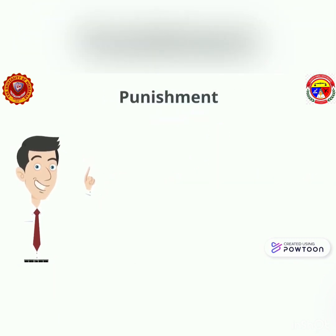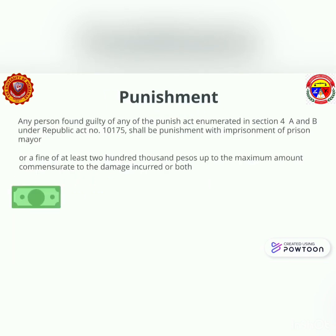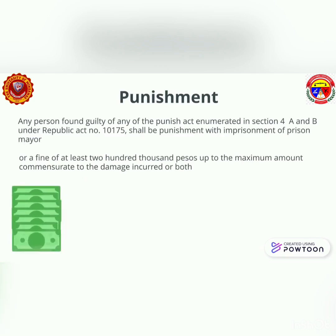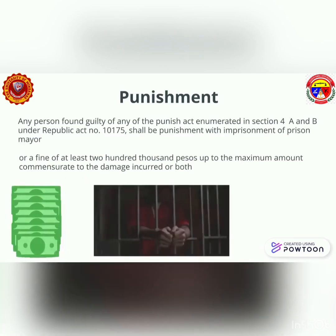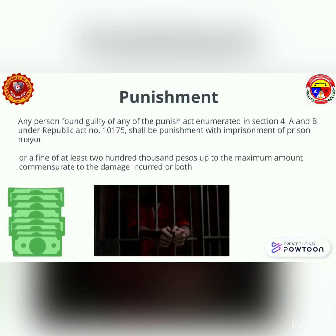What are the punishments for illegal interception? Any person found guilty of any of the punishable acts enumerated in Section 4A and B under Republic Act No. 10175 shall be punished with imprisonment of prision mayor, or fined at least P200,000 up to the maximum amount commensurate to the damage incurred, or both.